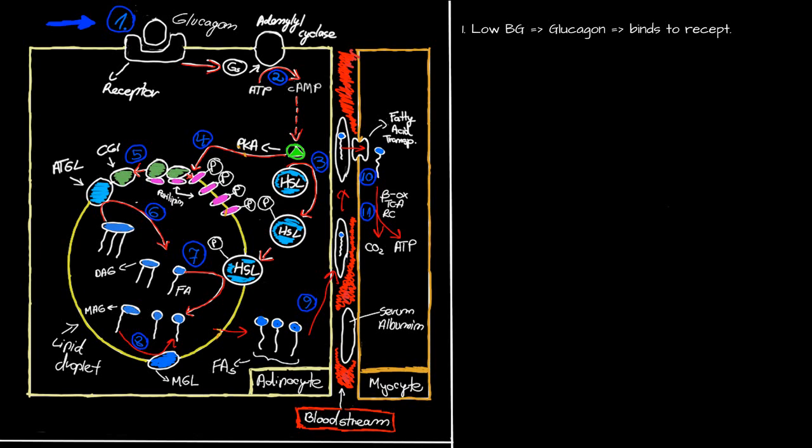I think it's easier to learn if we make this a step-by-step process. So, this stimulates adenylyl cyclase to produce cyclic AMP.